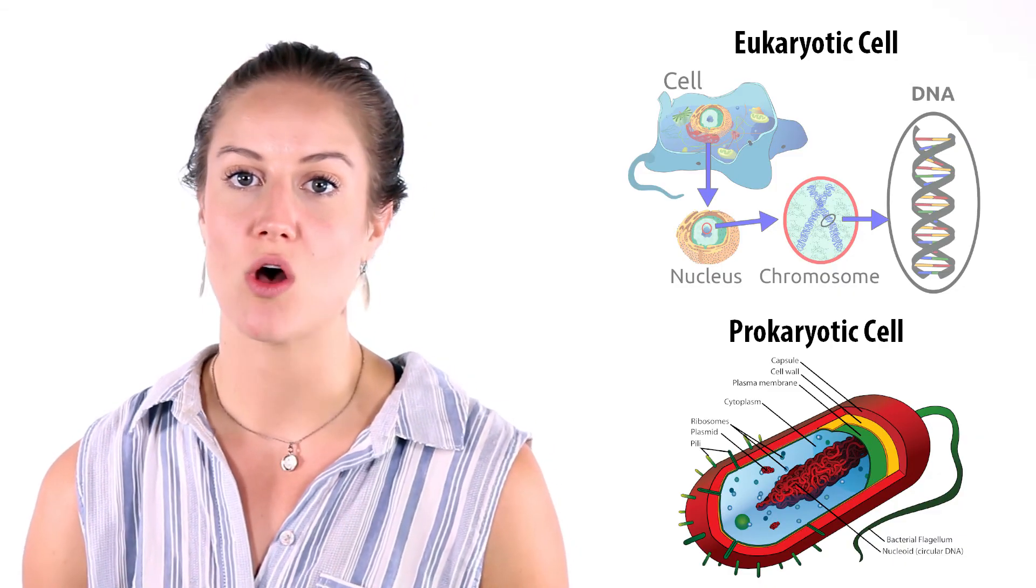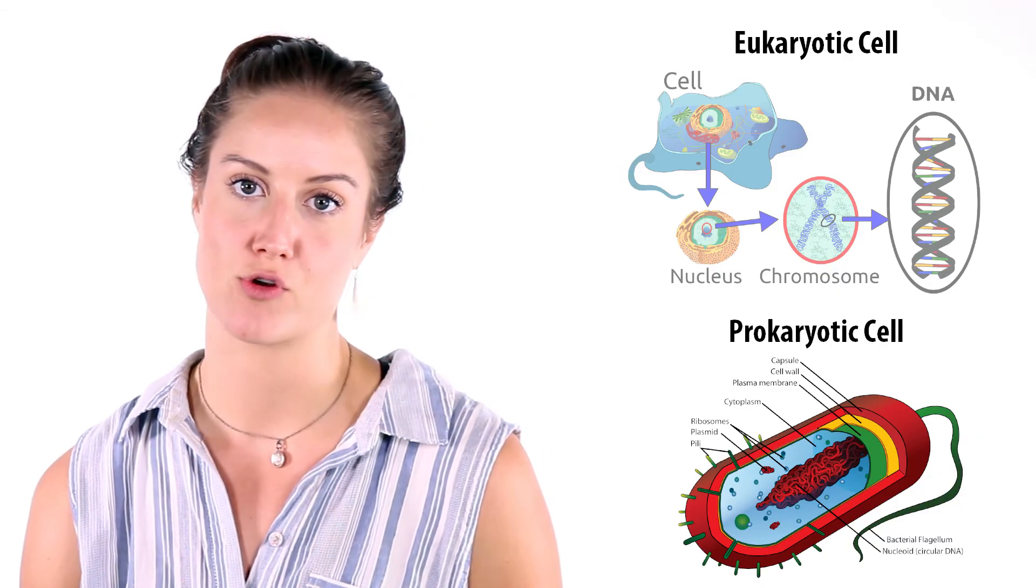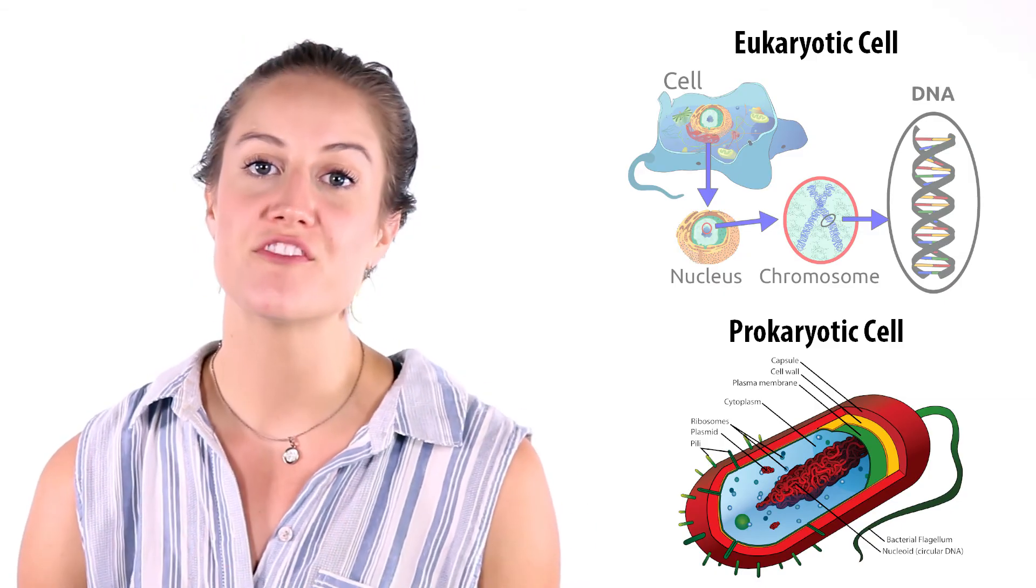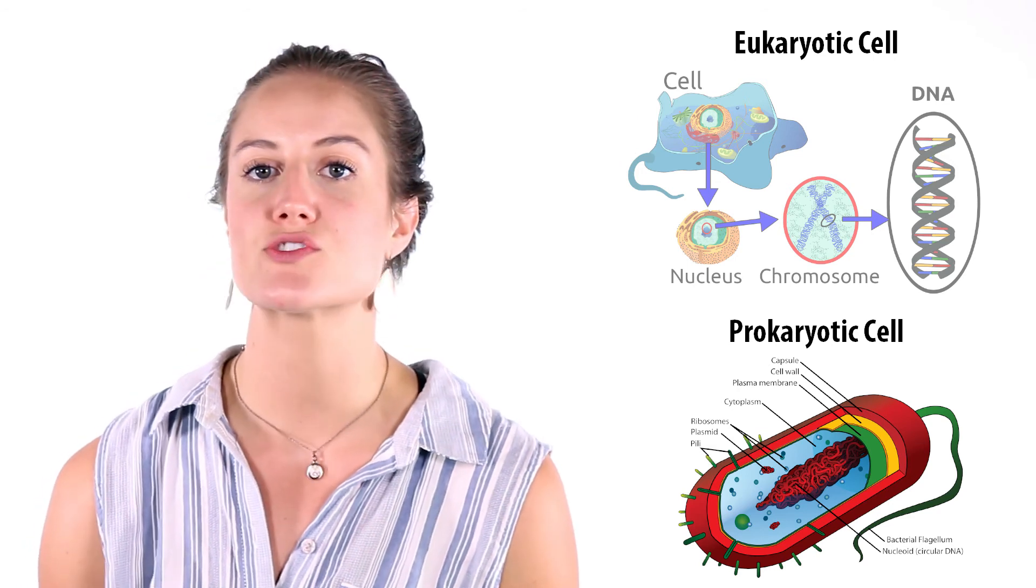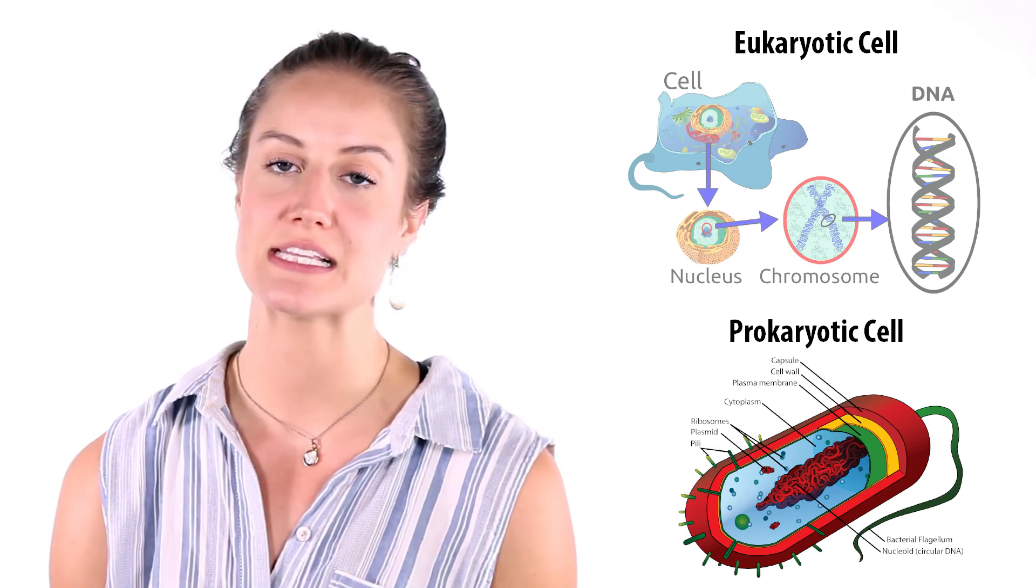In prokaryotes, all the DNA is a single round-shaped chromosome in the cytoplasm. There are a few prokaryotes, bacteria for instance, and a few eukaryotes that have extra-chromosomal DNA called plasmids.